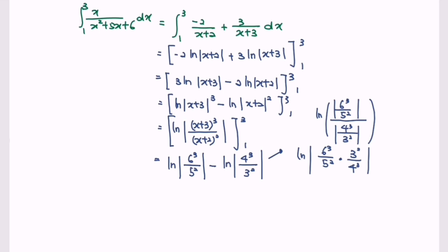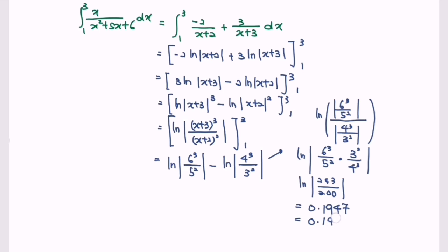If we simplify the situation, we will have ln(1243 over 200), or we can express it as a decimal which is 0.1947, or expressed to 3 significant figures which is 0.195. So here we are, and thanks for watching.